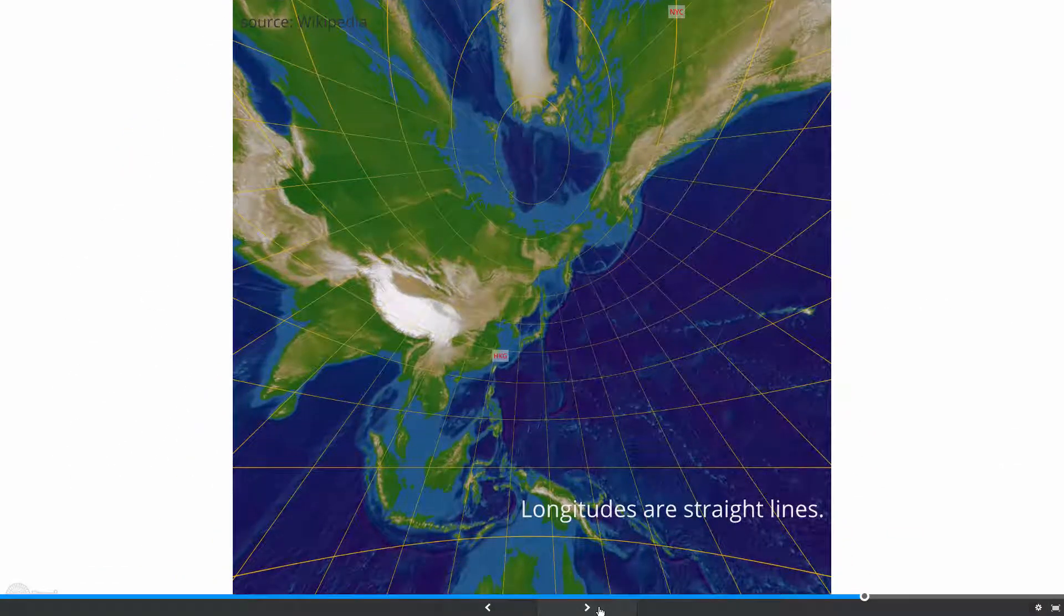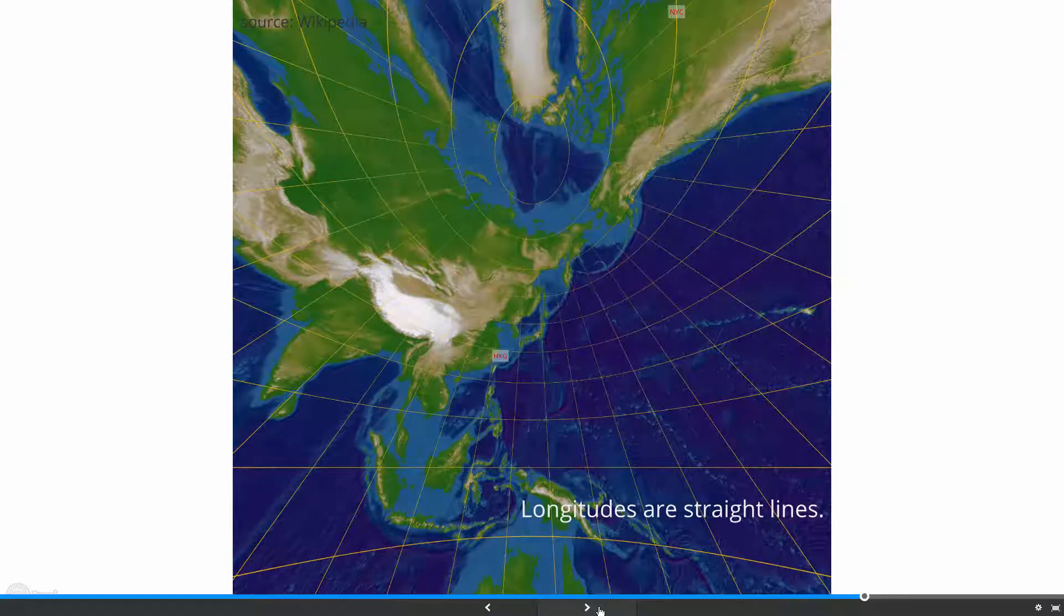Since all longitudes are great circles, they are always shown as straight lines on a Gnomonic map. From the map, you can see why the airplane from Hong Kong to New York flies over the polar region.